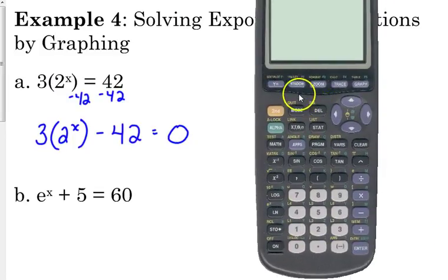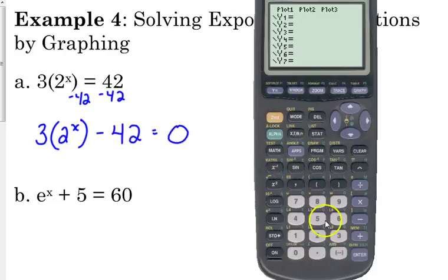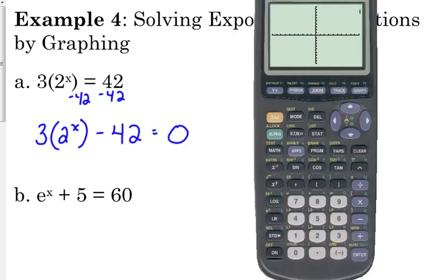we're going to go to our calculator, go to our y equals, type it in exactly how it looks on our paper. Here, 3 parentheses, 2 to the x, close the parentheses, minus 42. And then we are going to press graph.